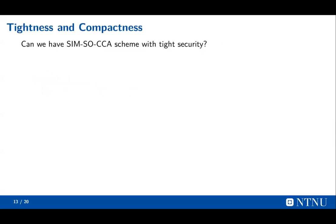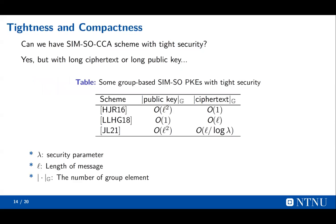So we ask: can we have a SIM-SO-CCA scheme with tight security? The answer is yes, but it is not very satisfactory. Some group-based SIM-SO-CCA schemes with tight security have long ciphertexts or long public keys. A long public key means that the number of group elements in the public key is not a constant — it depends on the length of the message, and similarly for long ciphertexts.